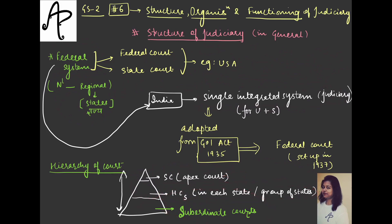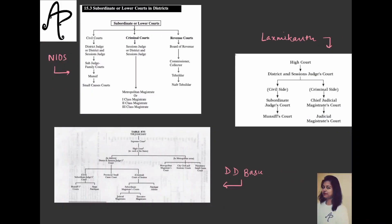The issue comes with the subordinate courts. Their case is that there are variations across states. Different states have different structures — at the district level and then below, even at the village level, there are subordinate courts. So in their structure there is a little change. When it changes, you get different kinds of information from different sources. I have quoted three very reliable sources here.